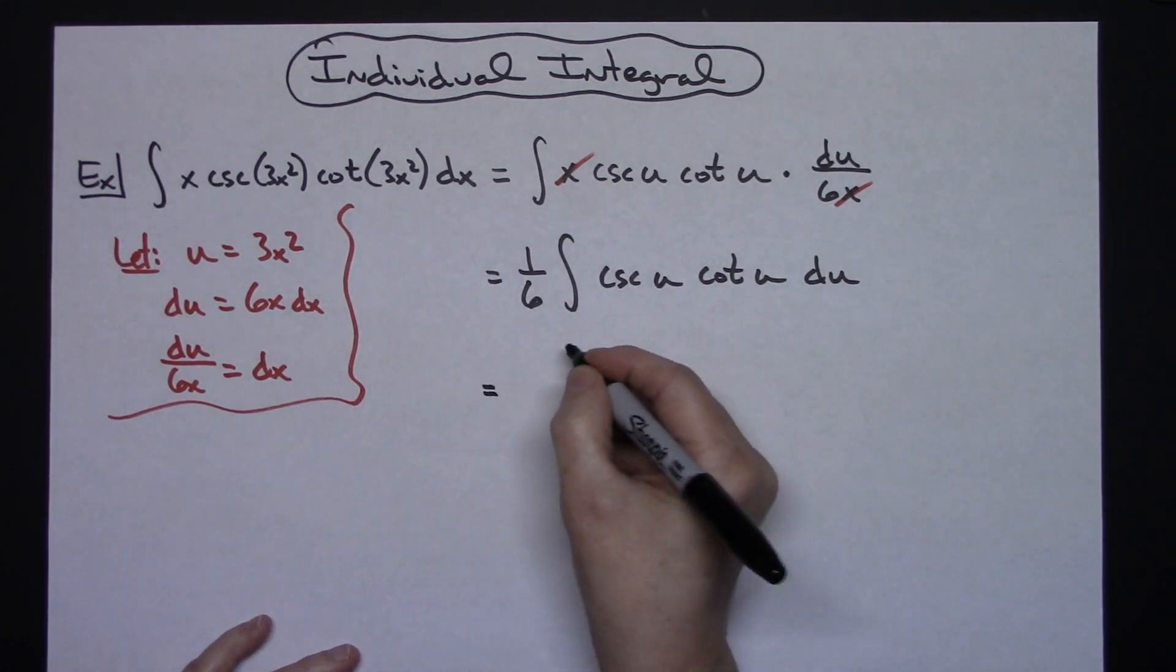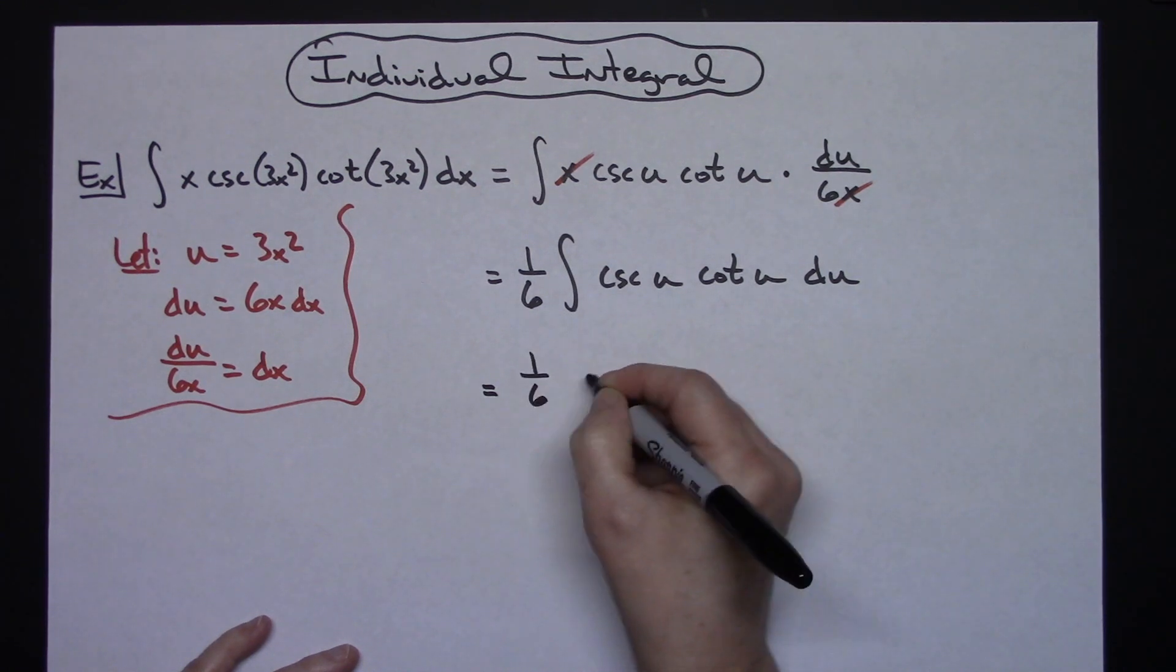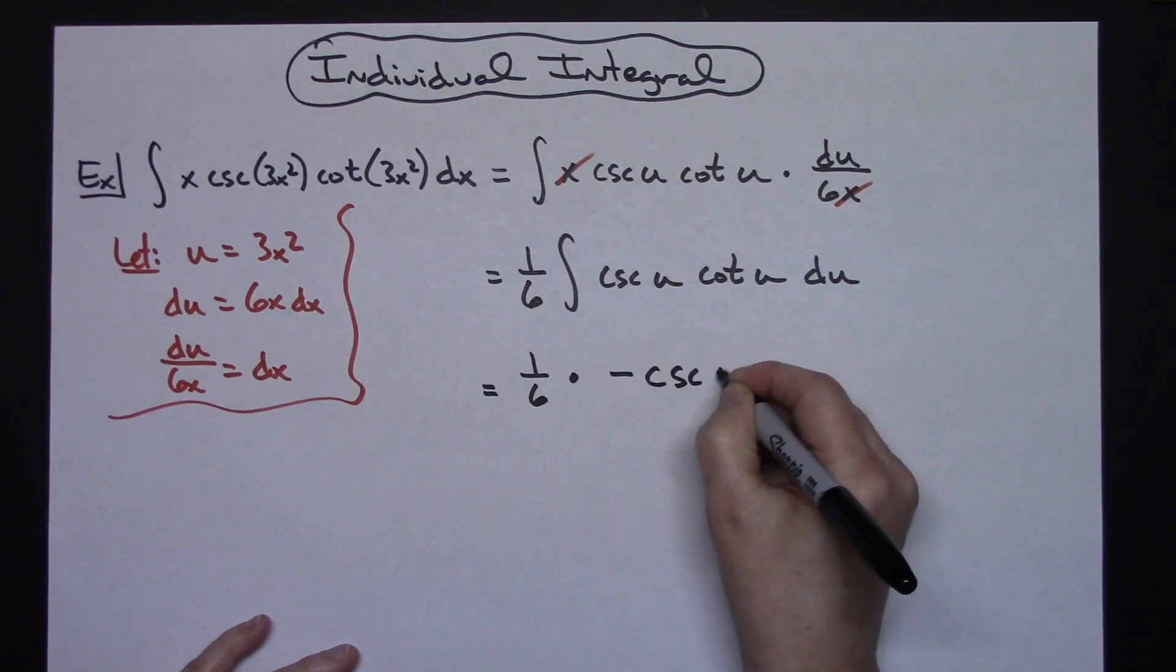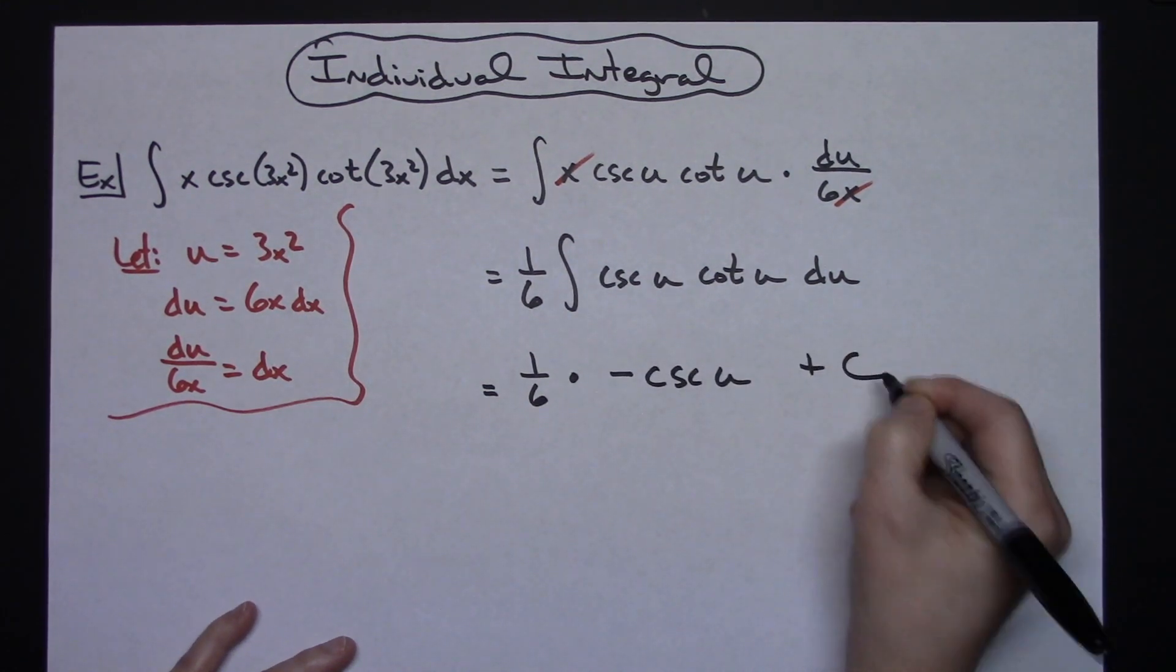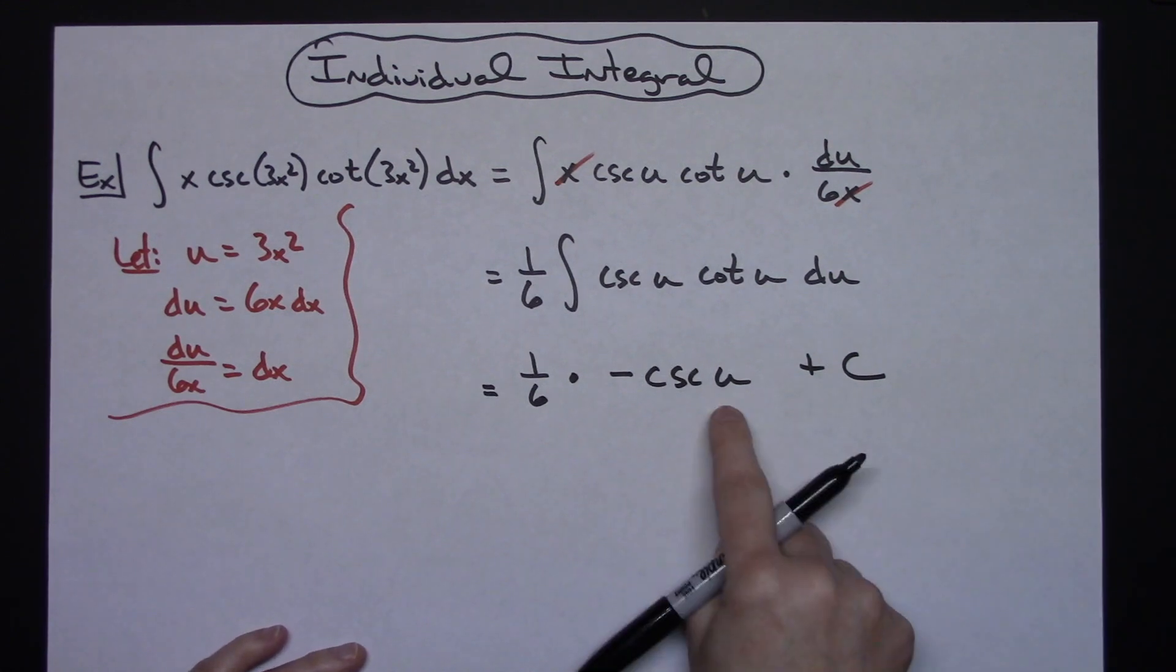Okay, so we'll have the 1/6, let's go ahead and leave that out in front. And then, integrating this, I get a negative cosecant u. I can go ahead and put the plus C on there because I'm done integrating.